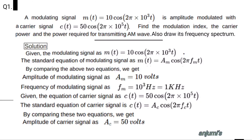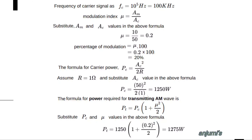The carrier signal is C(t) = 50 cos(2π × 10⁵t). The standard equation of carrier signal is C(t) = AC cos(2π fc t). By comparing these equations, we get amplitude of carrier signal AC = 50 volts, and frequency of carrier signal fc = 10⁵ Hz, that is equal to 100 kHz.